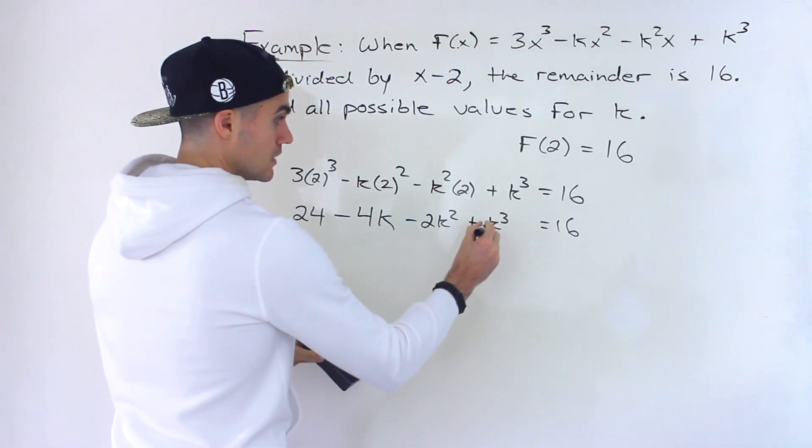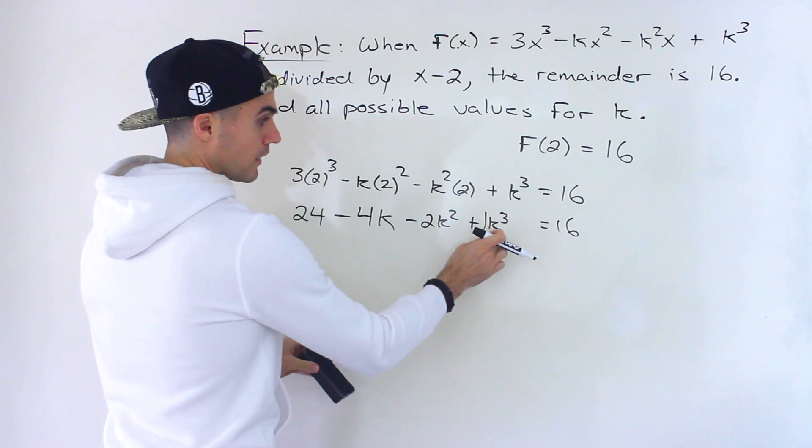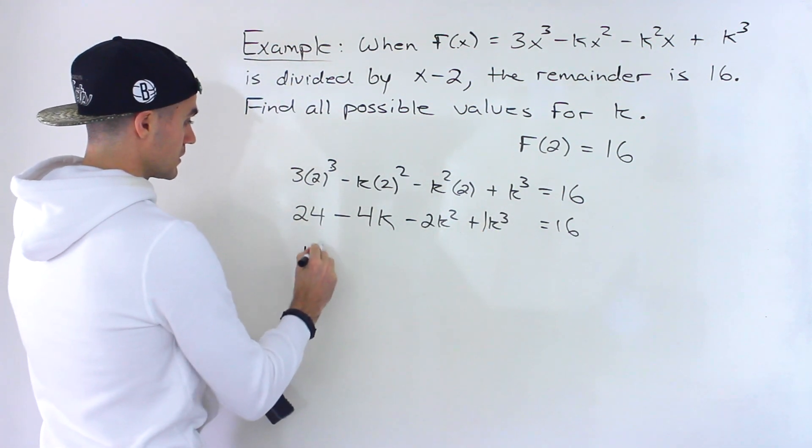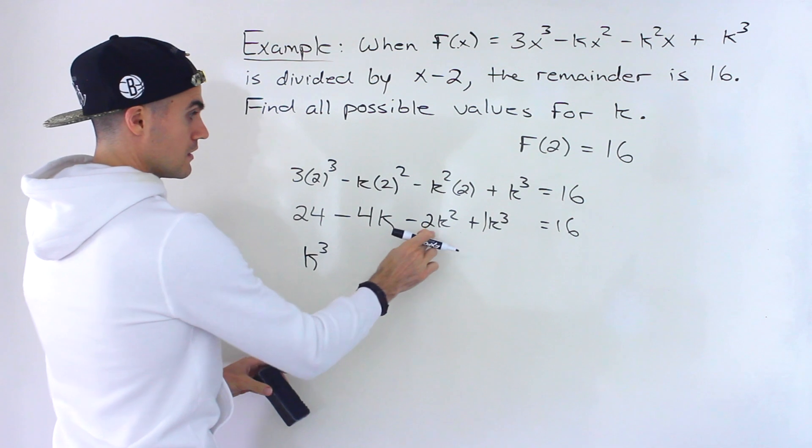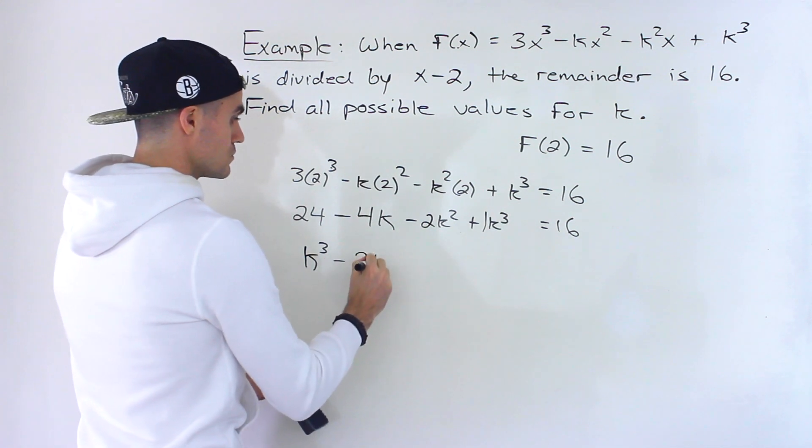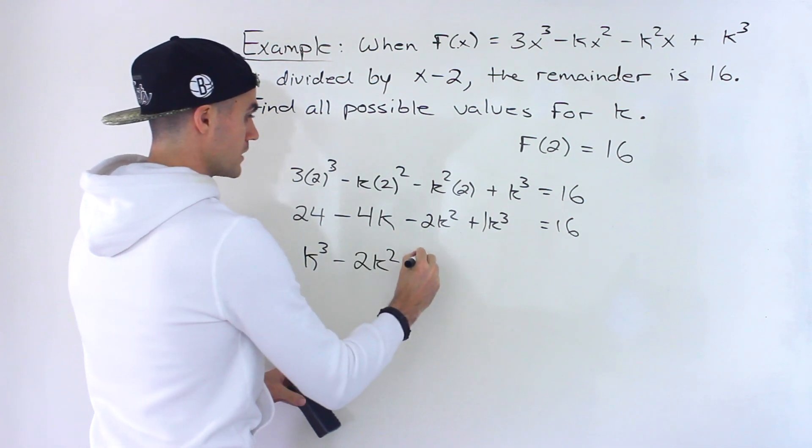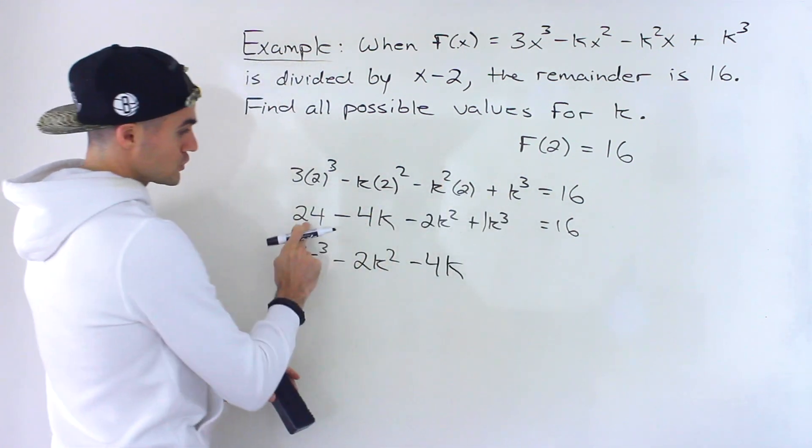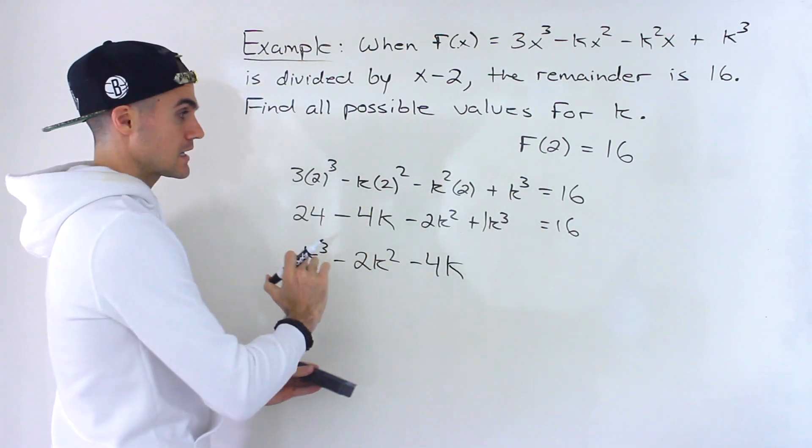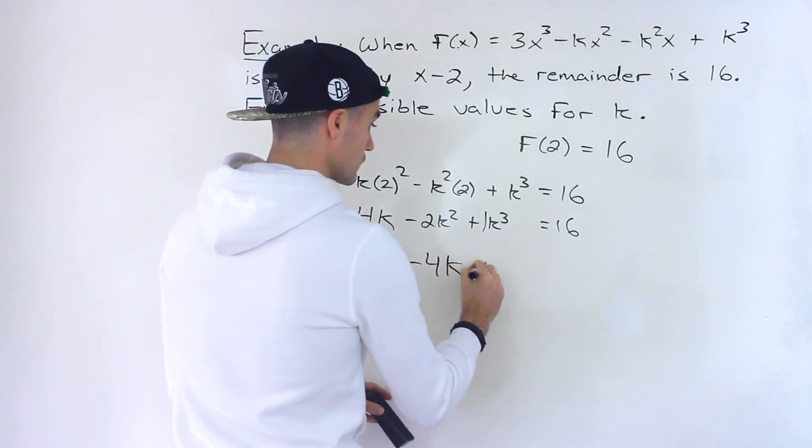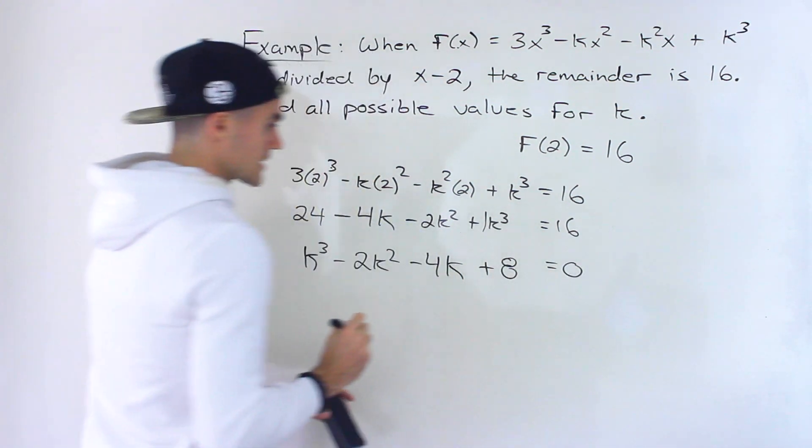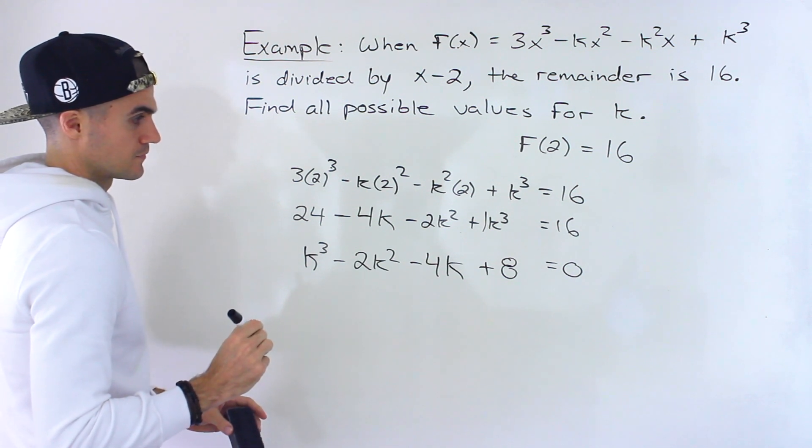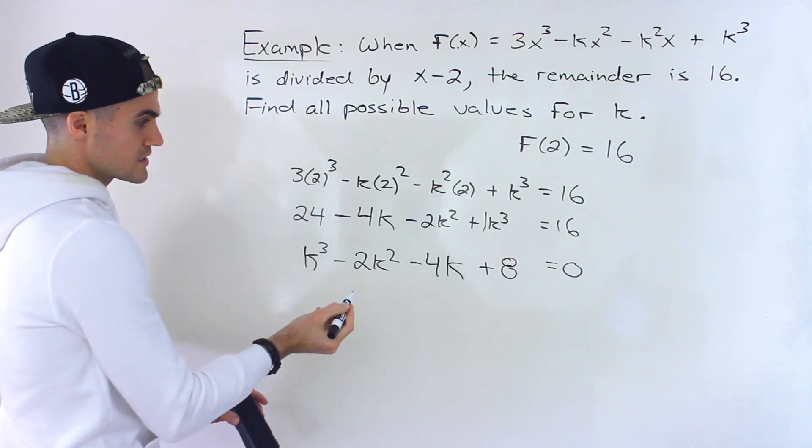The leading coefficient is 1, and I want to keep it positive, so I'll put k³ first: k³ - 2k² - 4k, then bring the 16 over. 24 - 16 gives us +8, so k³ - 2k² - 4k + 8 = 0.